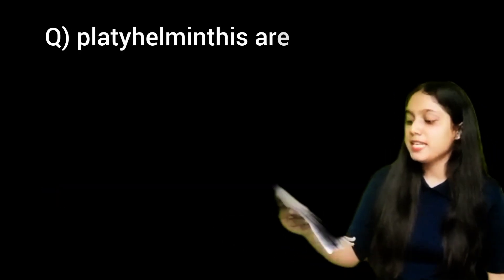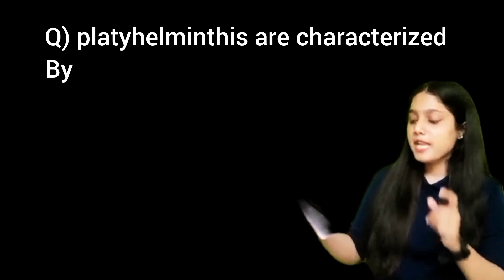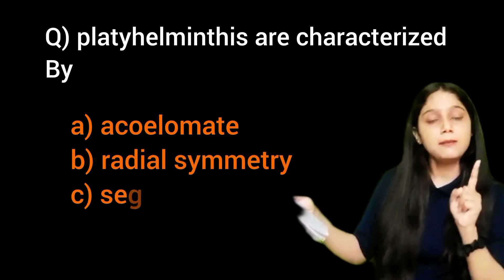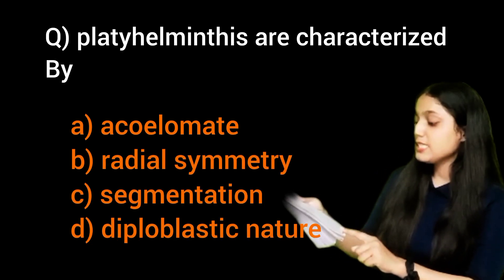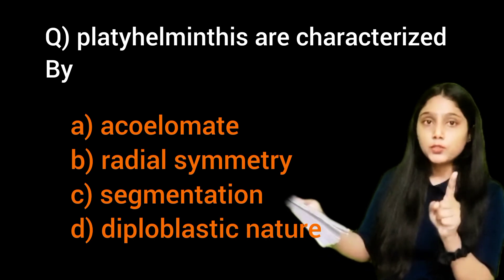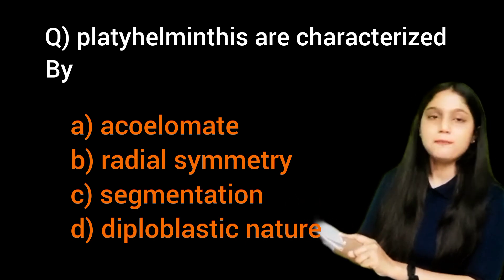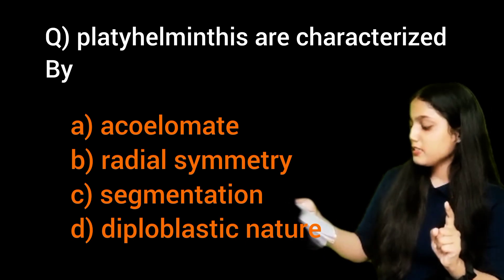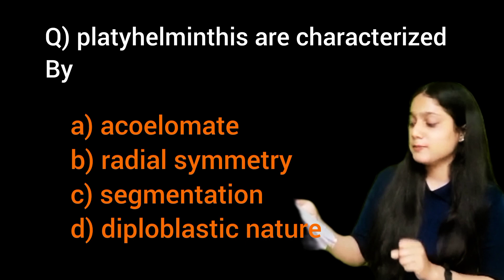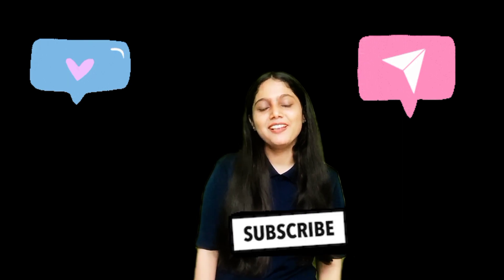The next question is: Platyhelminthes are characterized by? The first option is acoelomate nature — that is absolutely right, Platyhelminthes are acoelomate organisms. Next is radial symmetry — Platyhelminthes do not show radial symmetry; instead, they show bilateral symmetry. Next is segmentation — Platyhelminthes do not show segmentation. Option D is diploblastic nature — Platyhelminthes are actually triploblastic organisms. So the right answer is the first option. That was it for today's video. I hope you understand. If you did, please give it a like, share it with your friends, and don't forget to subscribe to our channel. Until then, bye bye!